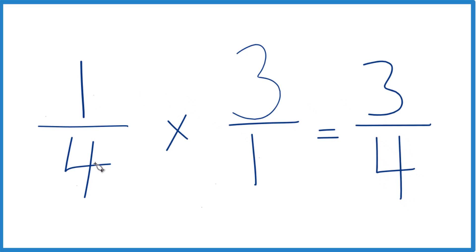So one-fourth times three, or one-fourth of three, is three-fourths. If you wanted this in decimal form, you could take three divided by four, which gives you 0.75.